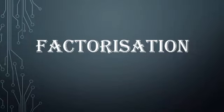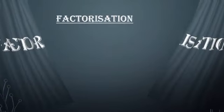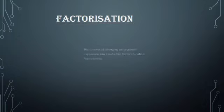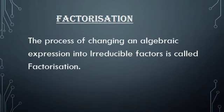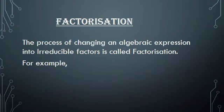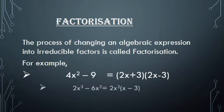Dear students, today our topic is factorization. The process of changing an algebraic expression into irreducible factors is called factorization. For example, 4x² minus 9 can be written as (2x + 3)(2x − 3). Here, 2x + 3 and 2x − 3 are the factors of 4x² − 9.